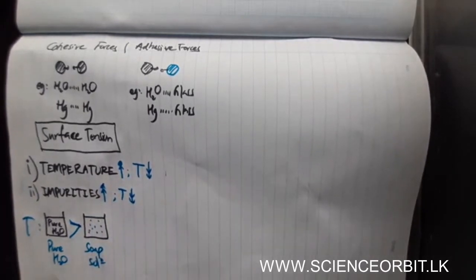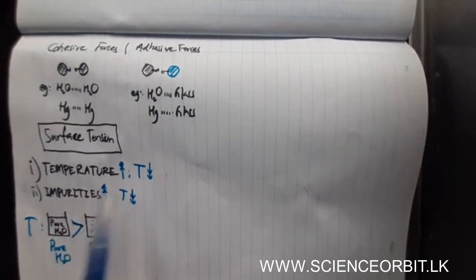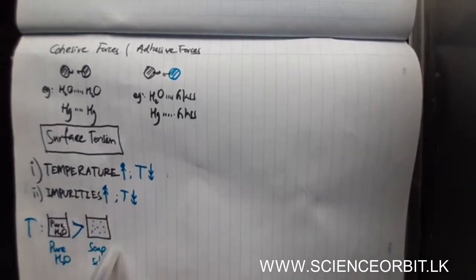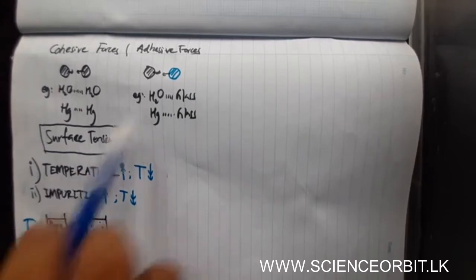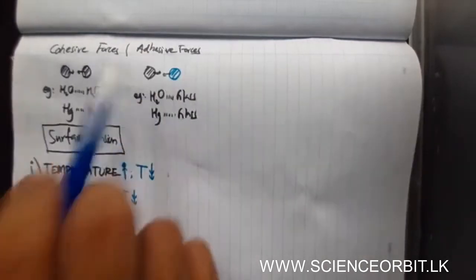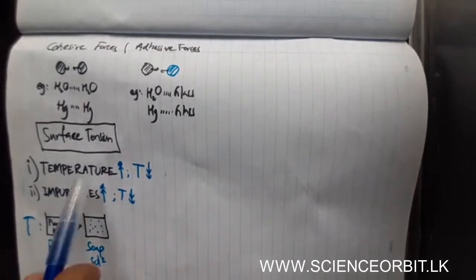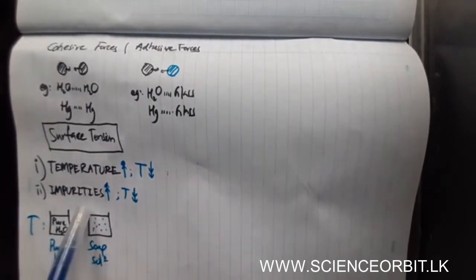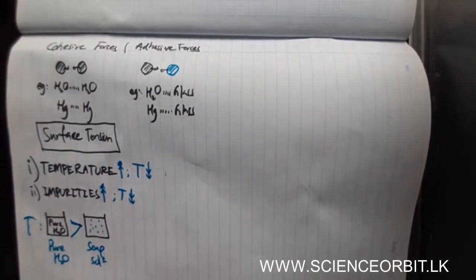We reduce the surface tension of water by adding impurities for our purpose. That is why we use detergent to wash clothes. These are the two factors which affect the surface tension of a liquid — temperature and impurities.